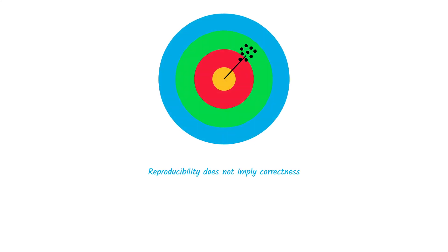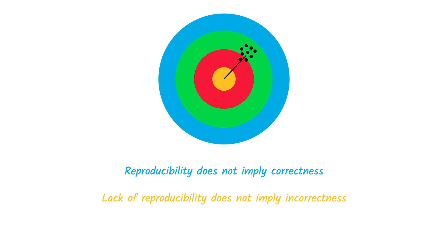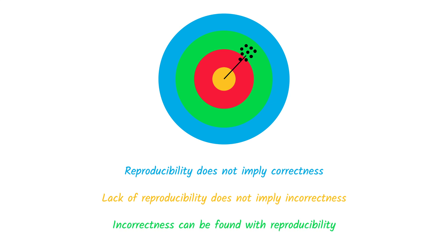One last thing to point out is that reproducibility does not imply correctness. We can keep reproducing consistent results, but the code might have a bug. On the other side, lack of reproducibility does not imply incorrectness — for example, we might not be able to reproduce old results because we cannot access old data storage, or we do not have all the proprietary software now out of the market. But it is important to remark that incorrectness can be found with reproducibility.